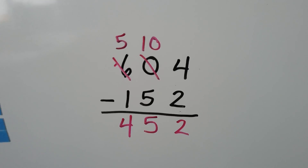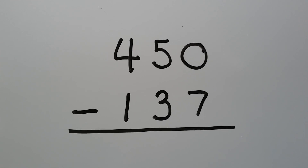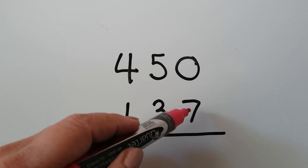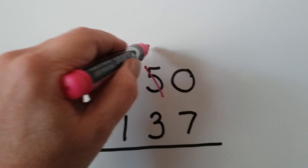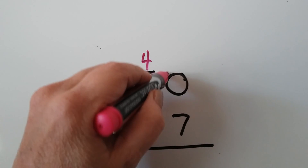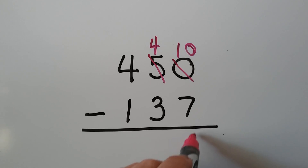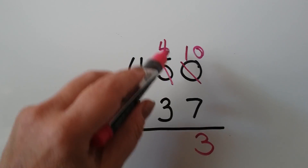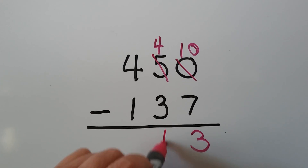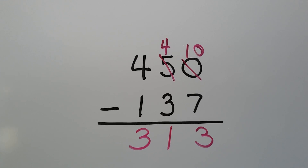Let's try it again — we're going to get lots of practice. We have 450 and we need to subtract 137. We can't have zero and take seven away, so we're going to regroup. This is going to become a four and we're going to give that ten to the ones place. Now we have ten take away seven. We have four take away three for the tens place — that's a one. And we have four take away one — that's a three. We have 313.